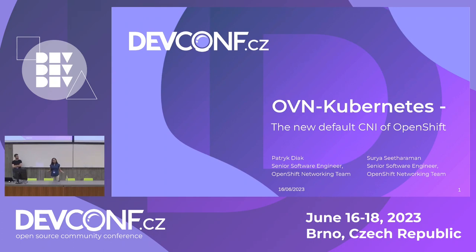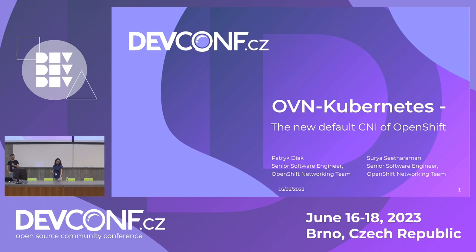Hey everyone, I'm Surya and I'm an engineer working in the OpenShift networking team at Red Hat. This is Patrick, my colleague, who also works in the same team. We are both here today to talk about OVN Kubernetes, which is the default CNI in OpenShift from the 4.12 release.